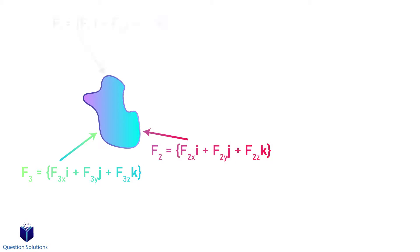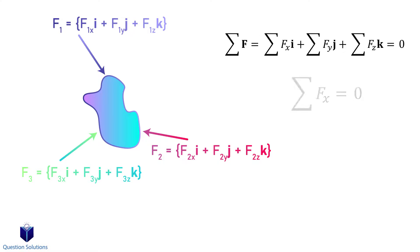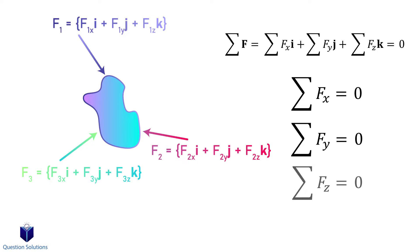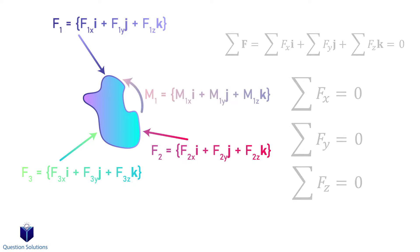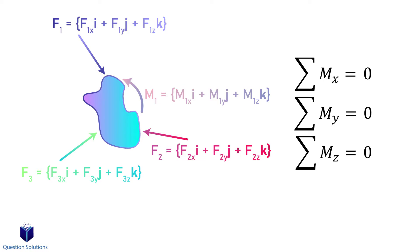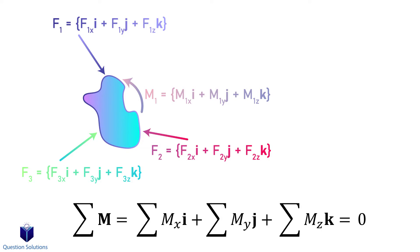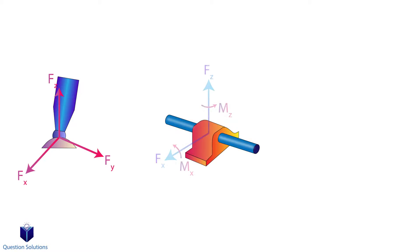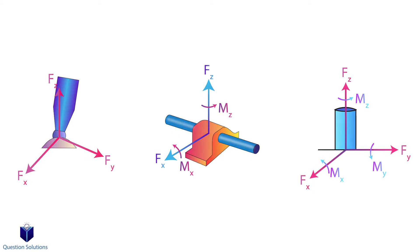So if we have an object with forces affecting it, for this object to stay in equilibrium — in other words not move — all the x components added together must equal zero. The same goes for y components and z components. The same is also true for moments, so if we calculate the moment about a point or an axis, the components must equal zero, otherwise the object wouldn't be in equilibrium. Each object will have different supports and each support will have different reactions.